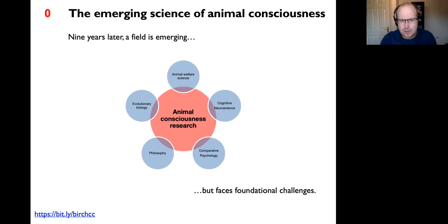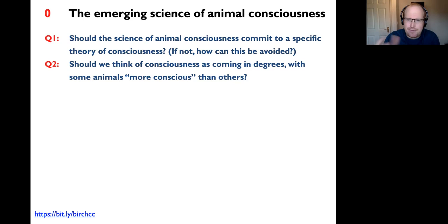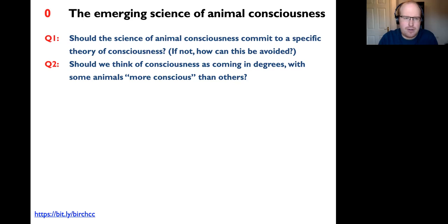The field faces conceptual and methodological challenges. Two are particularly interesting. One is the question of whether the science of consciousness should commit to a specific theory, and if not, how that can be avoided. A second foundational controversy is whether we should think of consciousness as something that comes in degrees, with some animals more conscious than others—are we at the top, with octopuses further down and bees and crabs even further down?